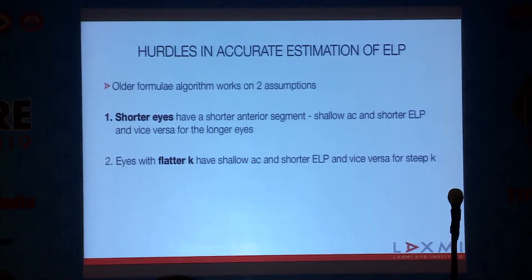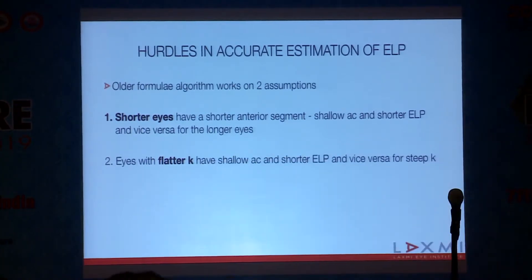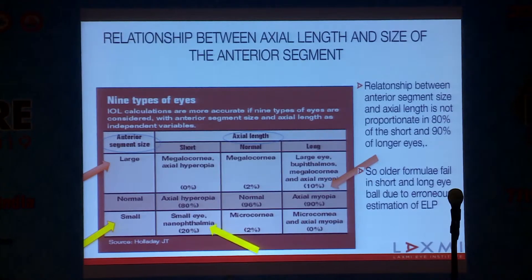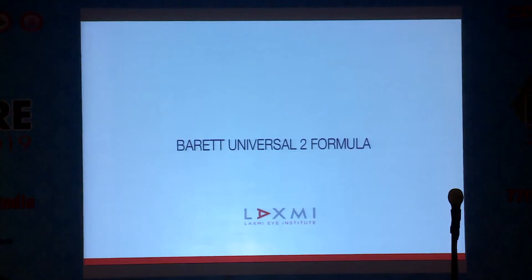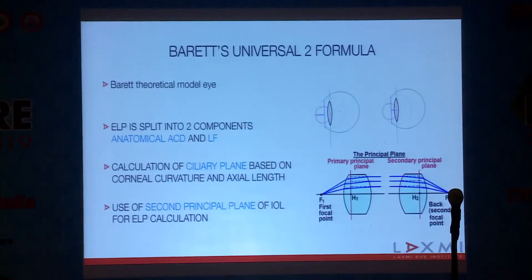If the IOL sits slightly posterior to what was predicted, we land in hypermetropia. The older formula algorithm works on two assumptions: that shorter eyes have a shorter axial length and hence a shorter anterior segment, shallow AC, and shorter ELP — and vice versa for longer axial lengths. Similarly, eyes with flatter K have a shallow AC and shorter ELP. But in reality, only 10% of long eyes have long anterior segments, and only 20% of short eyes have a shorter anterior segment. This is why older formulas fail in extreme eyes.